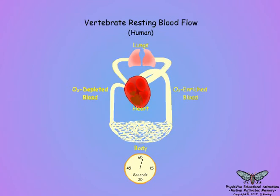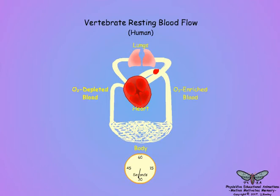In emergency situations, the heart rate increases and oxygen and metabolites, such as glucose for energy, can be delivered to the muscles in a matter of seconds to meet accelerated energy demands.